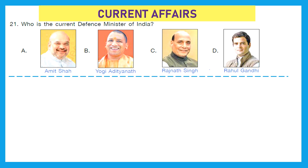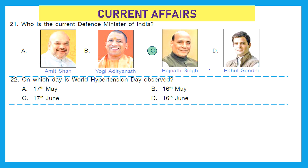Question 21: Who is the current defense minister of India? Amit Shah, Yogi Adityanath, Rajnath Singh, or Rahul Gandhi? The right answer is option C, Rajnath Singh. Question 22: On which day is World Hypertension Day observed? It is observed on 17th May every year. World Hypertension Day was initiated by the World Hypertension League to increase awareness of hypertension.